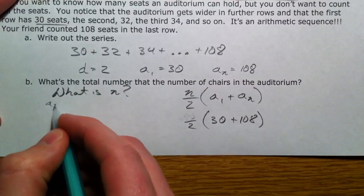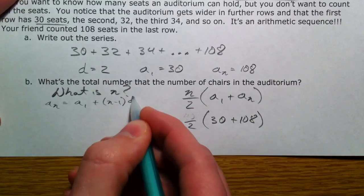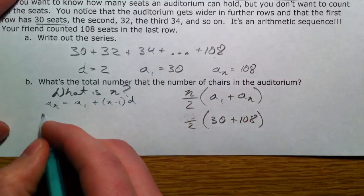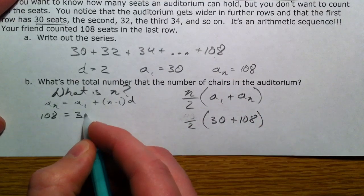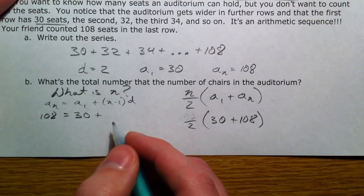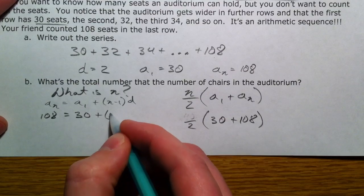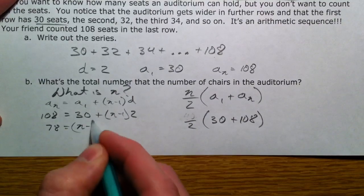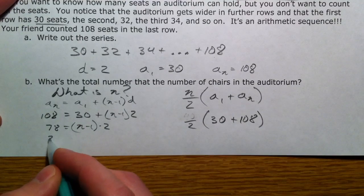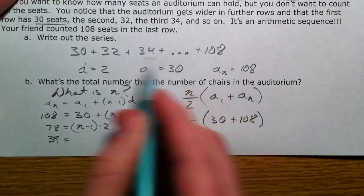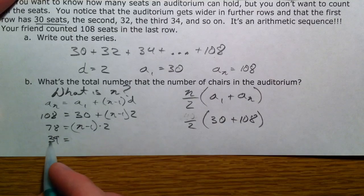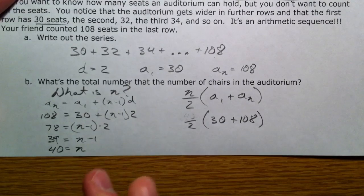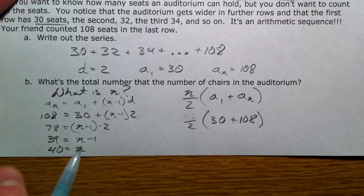So, for that, we're going to use that trusty a sub 1 plus n minus 1 times d equation. Again, you can think through this logically. How many times did we add 2 to get from 30 to 108? So, n minus 1 times 2, subtract 30, you get 78, n minus 1 times 2, and then divide by the 2, you get 39. So, 78 is the total difference between the first and the last row, and then if you divide it by 2 for each increase, it's increased 39 times. So, that means there's actually n is the 40th row. To get from the first to the 40th, you have to add 2 39 times. So, n is 40.